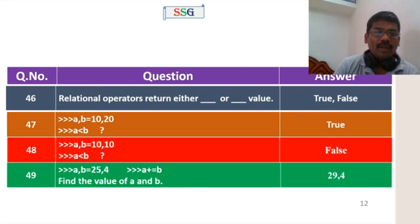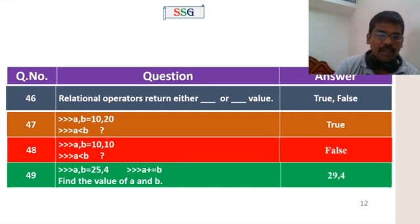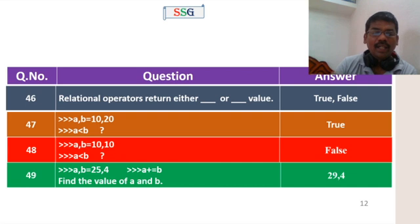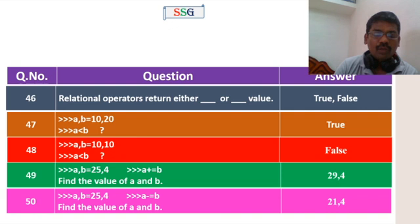a, b is equal to 25, 4. If we use a += b, then a is equal to a plus b. 25 plus 4 is 29, so a value is 29 and b value is 4. For a -= b, that is a minus b: 25 minus 4 is 21, b value is 4.